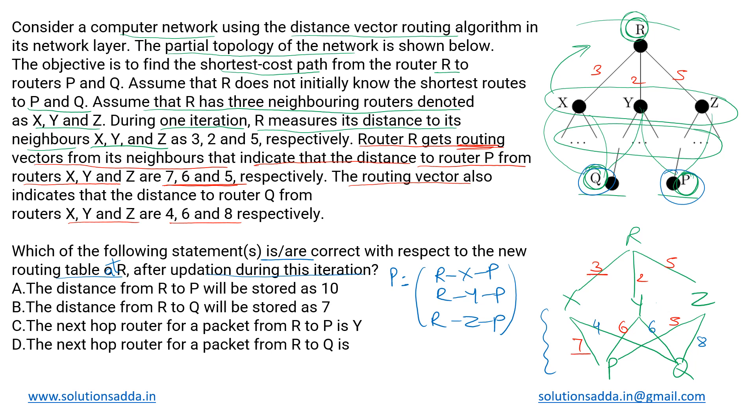Then the next which is R-Y-P, for that the total cost of this path is R to Y which is 2 and Y to P is 6, so 2 plus 6 is 8. Then for R-Z-P, R to Z is 5 and Z to P is 5.